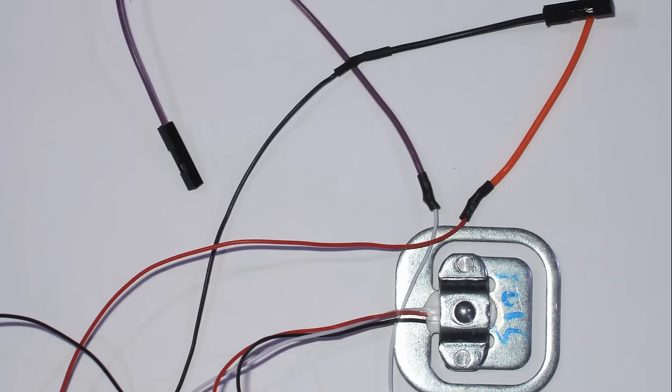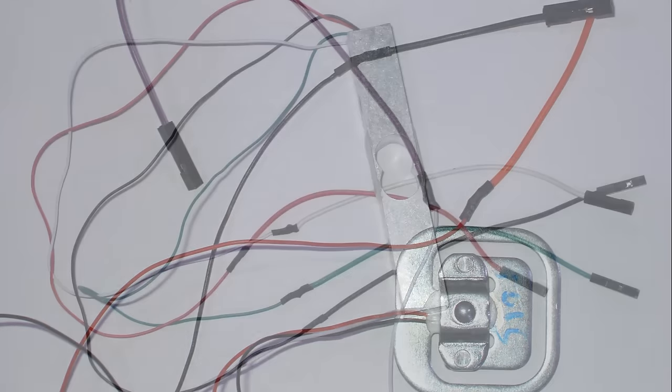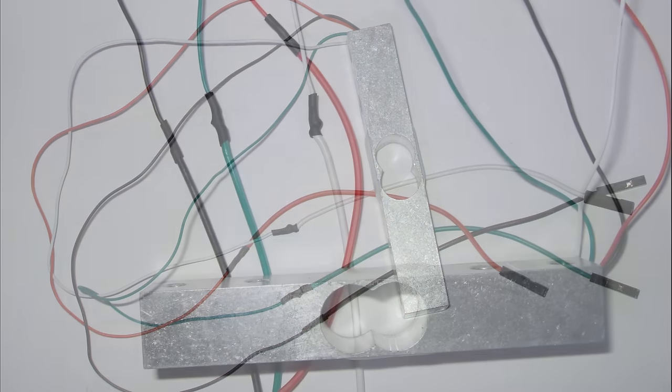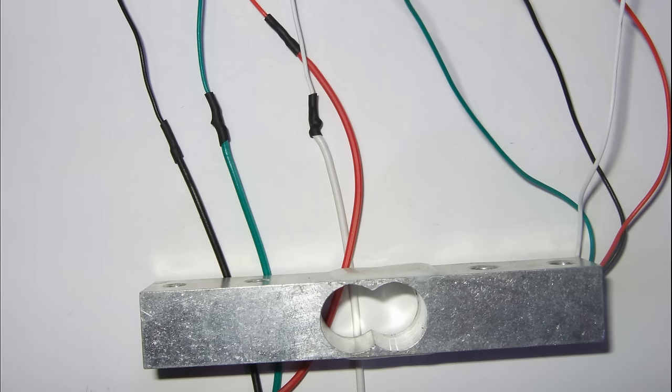The same method can be used if you have to connect parts with attached wires to your project. Examples are strain gauges for measuring weight. These strain gauges, by the way, are already prepared to be used in one of my later videos.